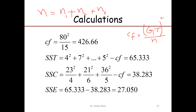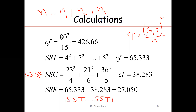SST is Σx² minus CF, where CF is the correction factor (the second term). The computed SST is 65. SSC (sum of squares between columns) corresponds to SSTR in the formula sheet. SSE can be computed as SST minus SSTR. This calculation gives SSE = 27.05. Now all the sums of squares have been calculated and will be divided by their respective degrees of freedom to obtain the variances.